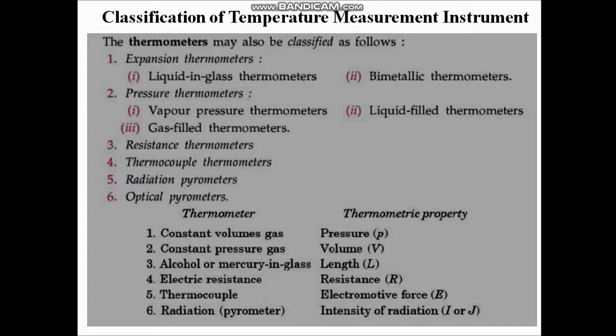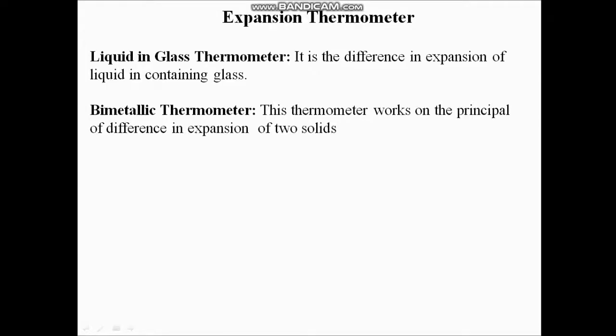Here in this slide we can see the kinds of thermometers and their thermometric properties on which they operate. Liquid-in-glass thermometer works on the principle of expansion of a liquid contained in glass. Similarly, bimetallic thermometer works on the principle of expansion of two solids. Now we will see each one — liquid-in-glass and bimetallic thermometers — one by one.